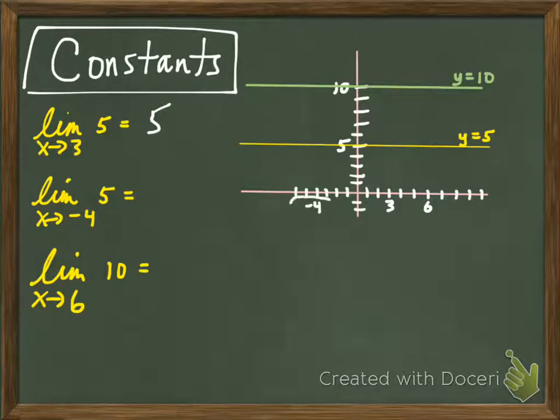If we look at this other one, as x is approaching negative 4, as x gets closer and closer to negative 4, you can see, again, no matter where you are along this curve here, the y values are always 5, and so the limit as x approaches negative 4 of 5 is also 5. Go ahead and try the last one on your own. By now you're probably like, okay, let's move on, we know what the limit of a constant is.